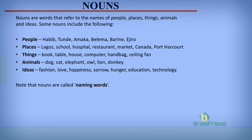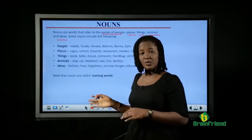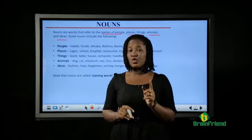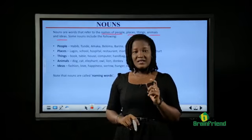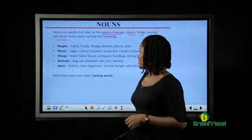What is a noun? Nouns are simply defined as words that refer to the names of people, places, things, animals, and ideas. Words that name people, things, animals, places, or ideas are known as nouns. Now let's take a look at some nouns in English language.